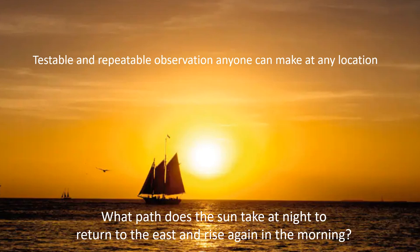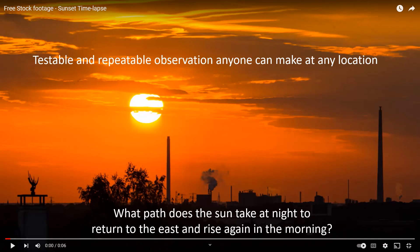That reply surprised me, because anybody can go out and observe what the sun does during the course of the day, and from that they can make a logical conclusion about where the sun goes at night. This is something that is testable and repeatable — an observation that anyone can make at any location. So let's see if we can answer that question using this sunset I found on the internet.